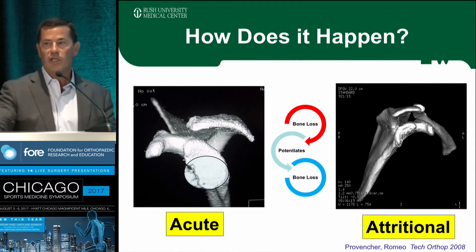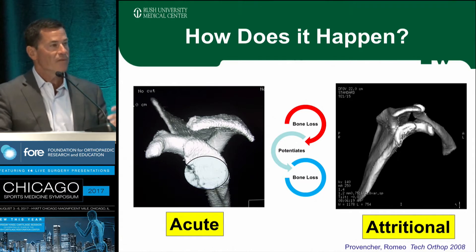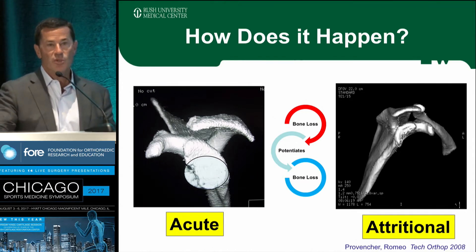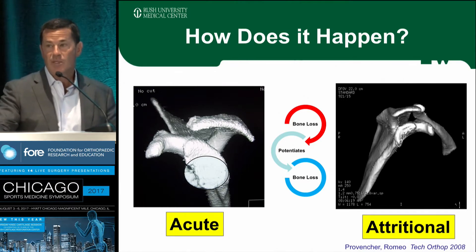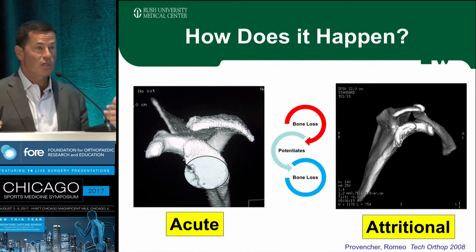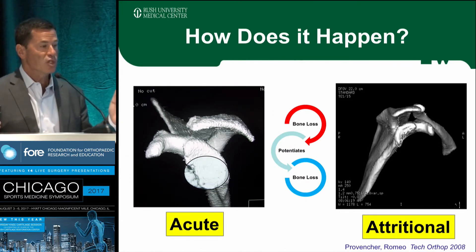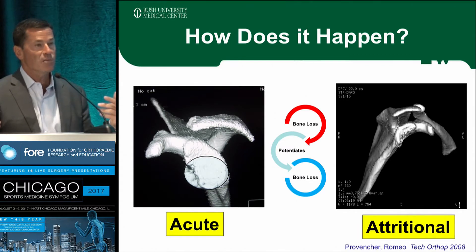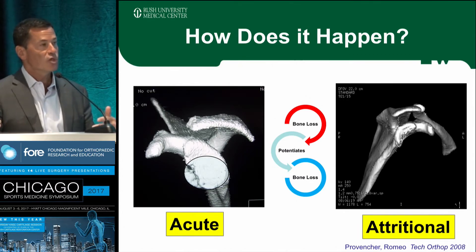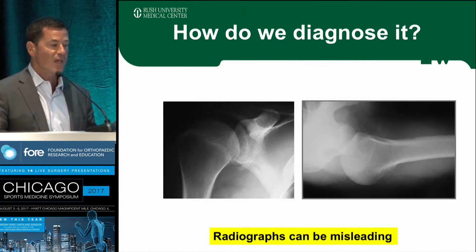Bone loss either happens acutely at the time of the first dislocation, or through attritional bone loss through repetitive instability. That case that Nick showed this morning — the young man says he's dislocated two times — I would venture to say there was probably a lot more going on there that was unbeknownst clinically. Attritional bone loss is what we most commonly see. The acute stuff we often manage differently, but when we get patients who are coming out at night, coming out in their sleep, coming out with low arm positions of abduction, those are patients you have to have on your radar.